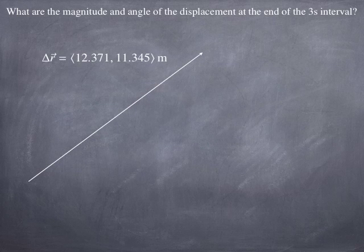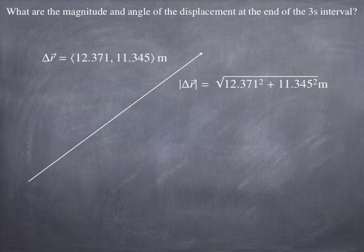Let's say we're asked to find the magnitude and the angle of the displacement at the end of the 3 second interval. Well, the magnitude of any vector is just the square root of the sum of the squares of the components of the vector. So since we have the displacement in component form, we can square each of those components, and we can compute the magnitude of that vector.